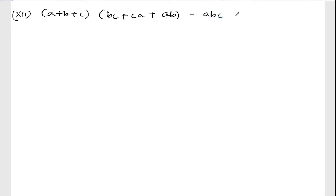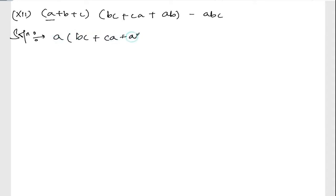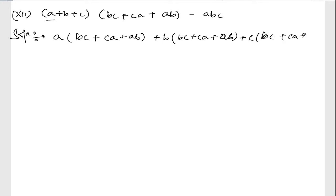Minus abc. For the solution, we multiply this out — first take a and multiply to all terms: a(bc + ca + ab). Then take b and multiply again: b(bc + ca + ab). Then take c and multiply: c(bc + ca + ab), then minus abc.